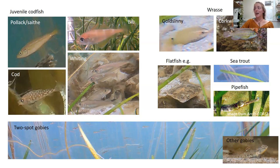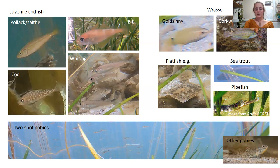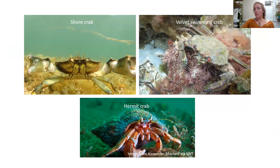I saw a few pipefish — really difficult to spot because they just look like a bit of seagrass, so I'm sure there were many I didn't see. There were lots of gobies — hundreds of two-spot gobies swimming in the water column, and lots of other gobies sitting on the seabed, which would be a mixture of sand gobies, common gobies, and painted gobies. For crabs, I saw loads of shore crabs, quite a lot of velvet swimming crabs, and quite a few hermit crabs.